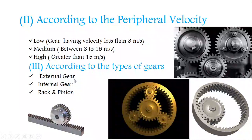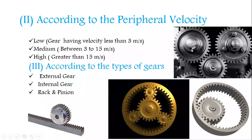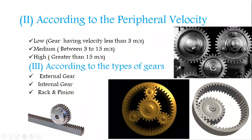According to the types of gears, they are classified into three types: external gear, internal gear, and rack and pinion. In external gear, the gears mesh on the outer diameter of the gear wheel. In internal gear, the gear is engaged inside — like a ring gear arrangement. In rack and pinion, a rack meshes with a pinion.